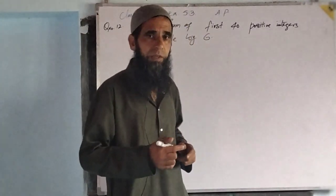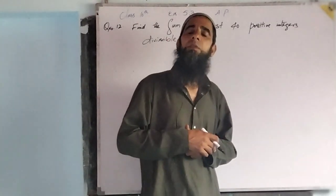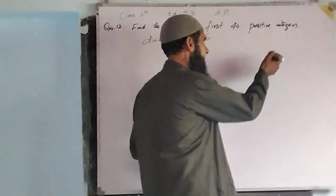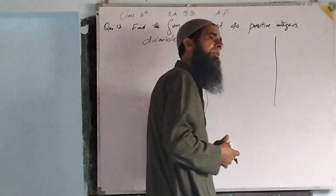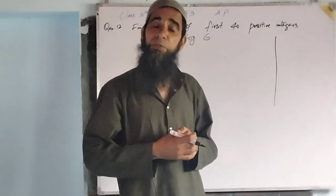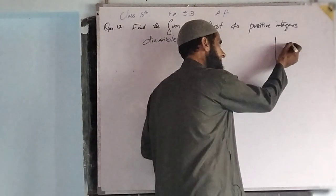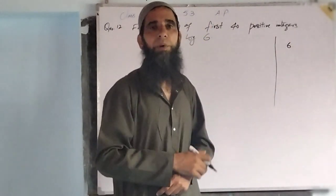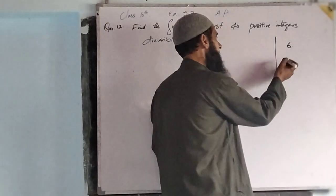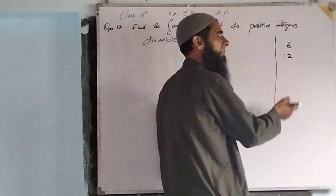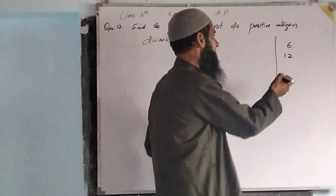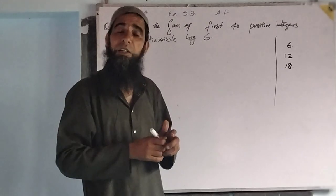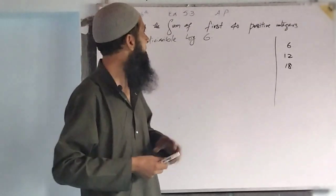If we define it here, the first positive integers which are divisible by 6 are like - the first positive integer which is divisible by 6 is 6 itself, and your second positive integer which is divisible by 6 is 12, and your third one is 18. Simply these are the multiples of 6.